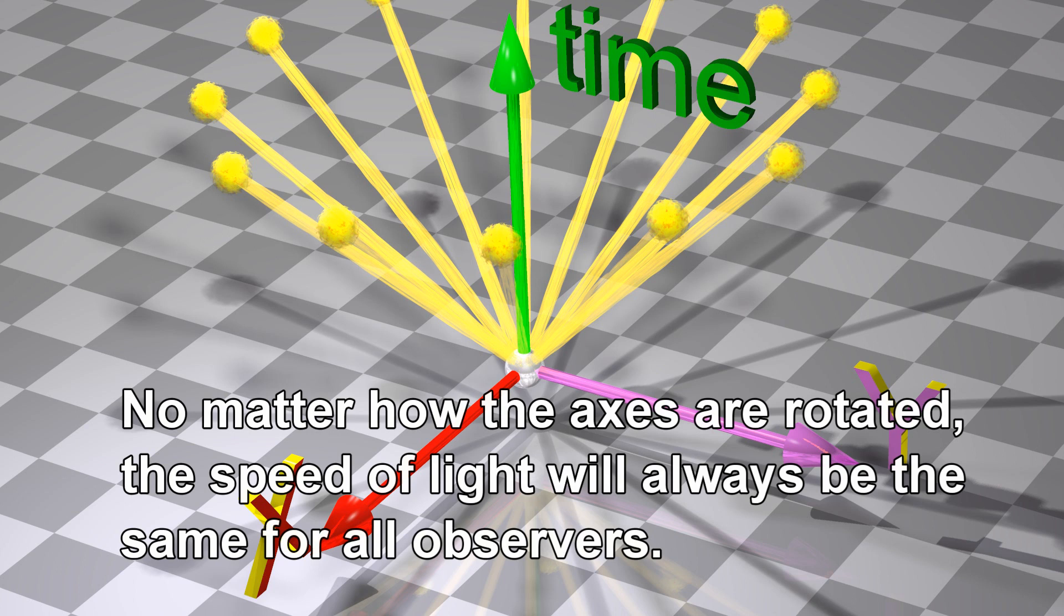No matter how the axes are rotated, the speed of light will always be the same for all observers.